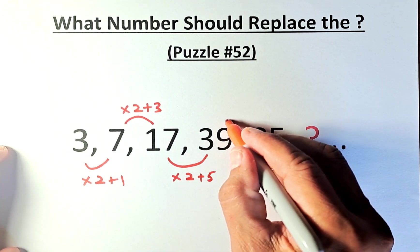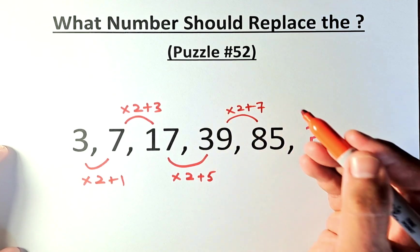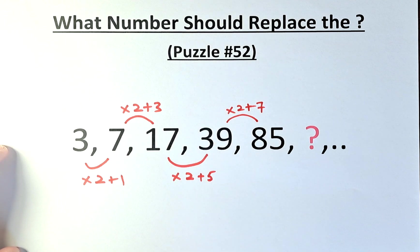So now we've got 39 to 85. We're going to multiply by 2 and add 7. 39 times 2 is 78. 78 plus 7 is 85.